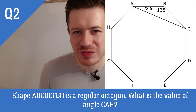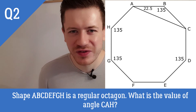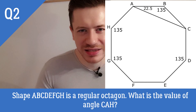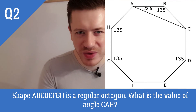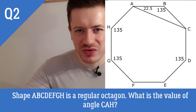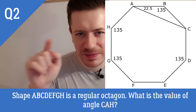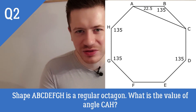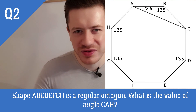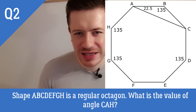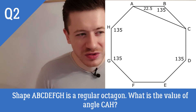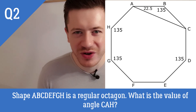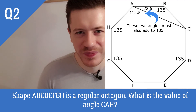Now we can find angle CAH. The entire interior angle at A is 135 degrees, just as it is elsewhere in the octagon. We simply subtract the small acute angle BAC — which is 22.5 degrees — from 135. That gives us 112.5 degrees for angle CAH. 112.5 degrees is correct.